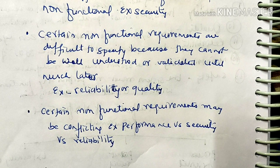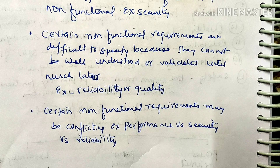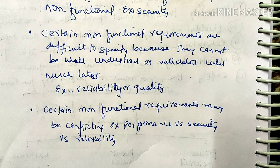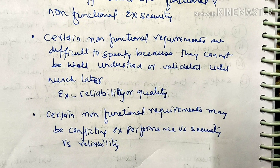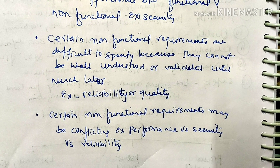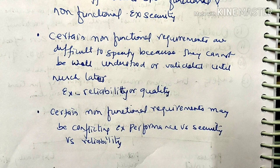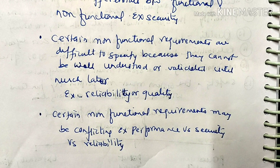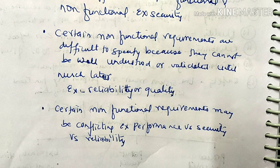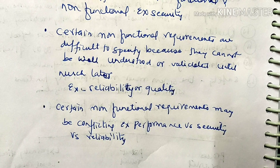Certain non-functional requirements may be conflicting. For example, performance versus security: you want the system to perform well, but you also want security and reliability. Some non-functional requirements are conflicting — such as performance, security, and reliability.